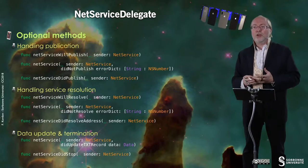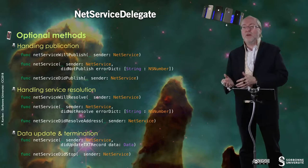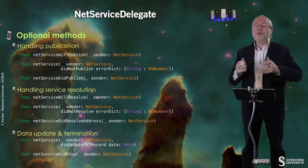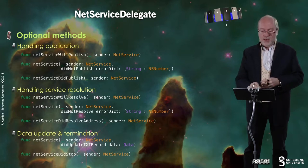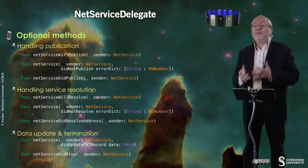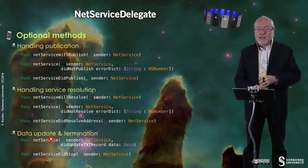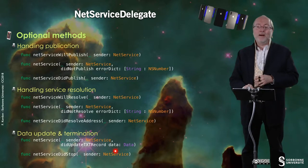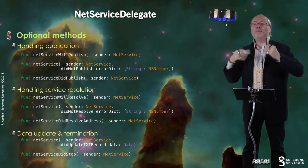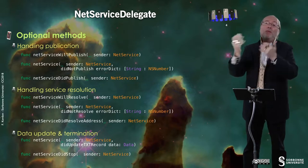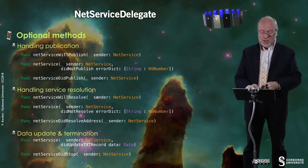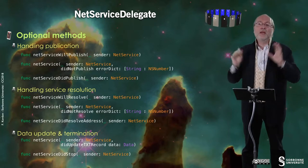You can also handle service resolution. You have NetService will resolve, NetService did not resolve — with information about why it could not be resolved — and NetService did resolve address, confirming everything is okay. You also have information about update and termination: NetService did update TXT record data. Thanks to this mechanism, Bonjour, you can share data, update data, and the data is propagated. When somebody propagates data to you, you are invoked with this method and made aware the data has changed. And NetService did stop tells you that the NetService has finished.